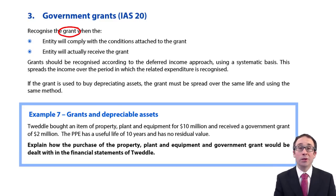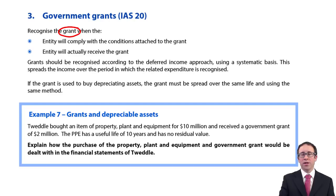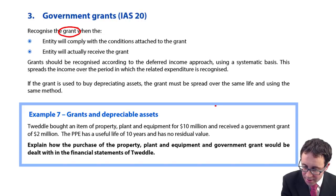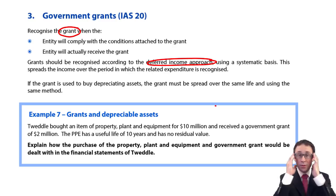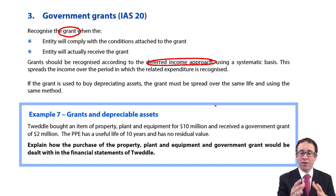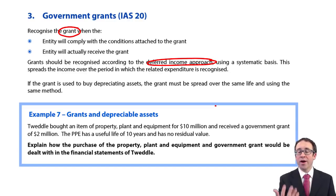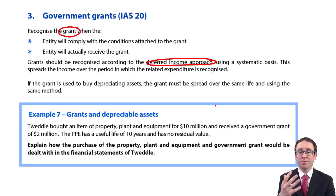What's going to happen is that you will receive money from the government, so you will debit the bank. The issue is what you do with the credit. The credit entry effectively uses what is referred to as a deferred income approach. When you receive the grant — assuming you've met the conditions laid out by the government — you recognise it as a receivable if it's promised, or as an asset under bank if you've physically received it. The credit side is shown as deferred income, and what you do with that deferred income depends upon whether it is to buy a depreciating asset.